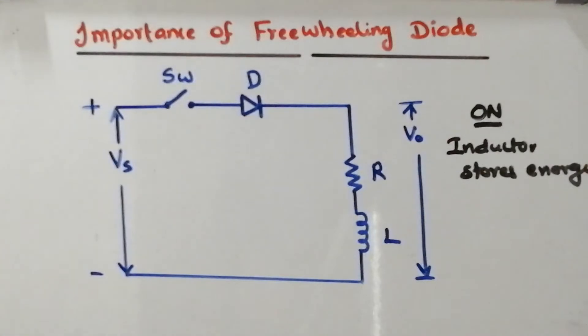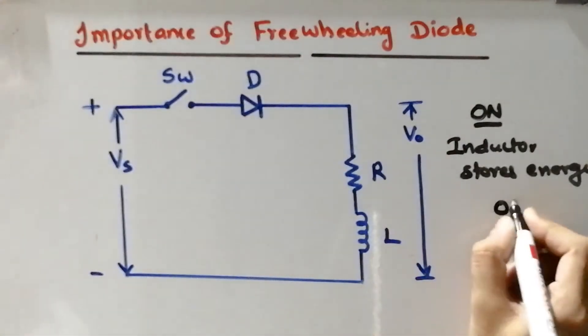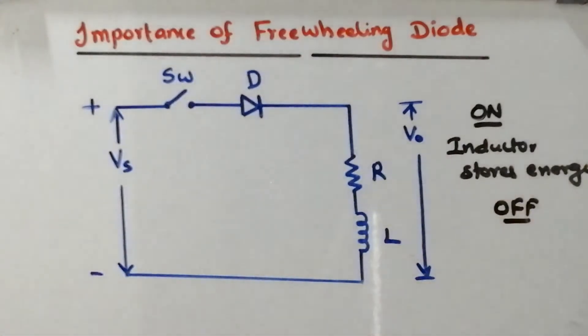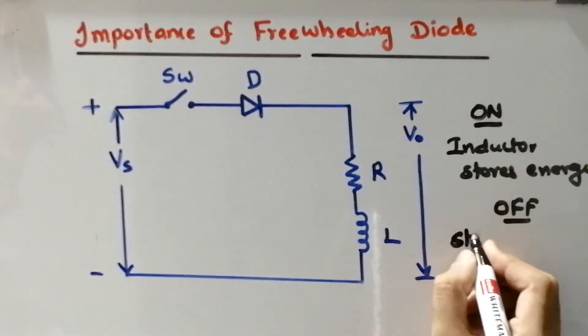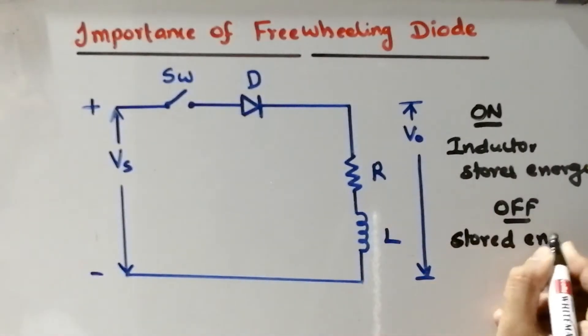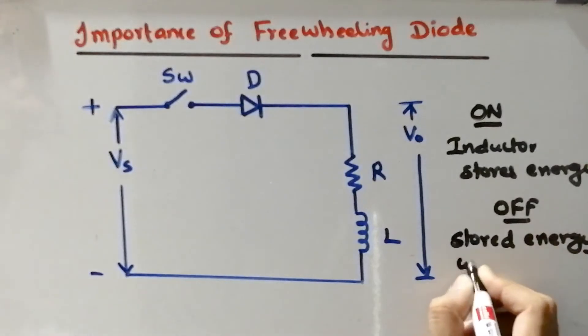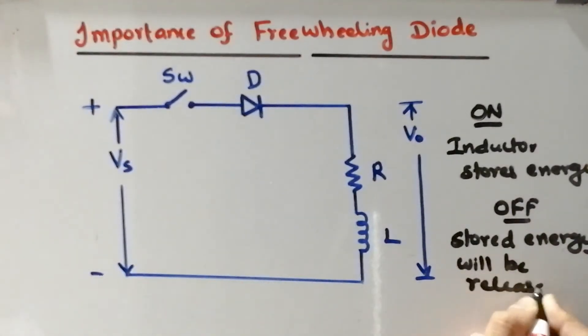When the switch is off during off condition, what is going to happen? During off condition, definitely the stored energy in the inductor will be released according to energy conservation rule.